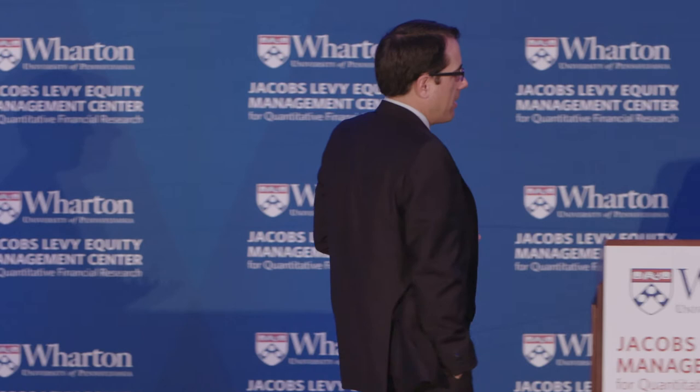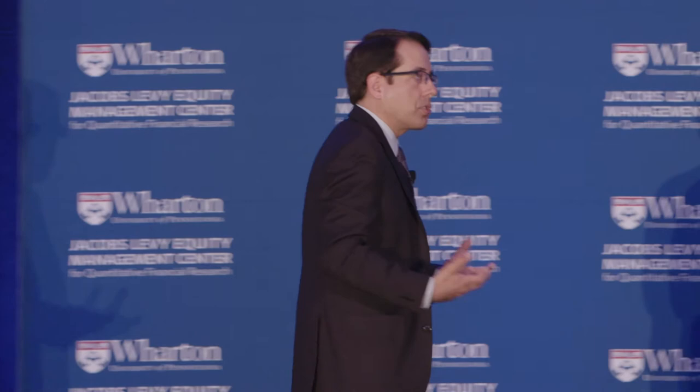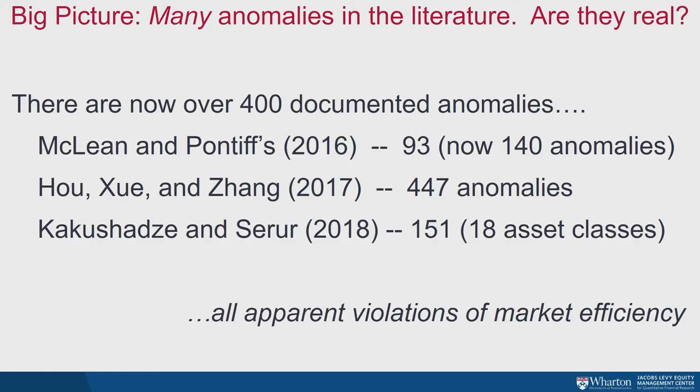As Bruce indicated, the title of the paper, Anomaly Time, gives a little bit of an idea of what we're going to do. The basic idea is we want to think about these asset pricing anomalies—variables that are thought to predict future abnormal returns—and we want to think about when they actually earn returns and when they don't. Hopefully that exercise will help us learn something more about the nature of anomalies.